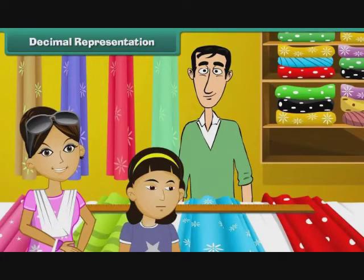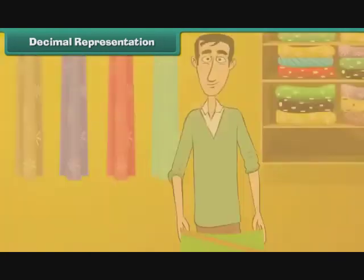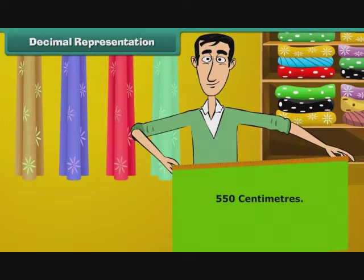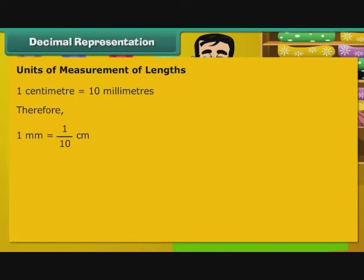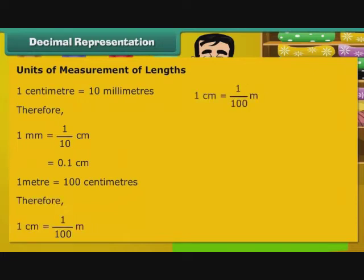Bela accompanies her mother to a saree shop. She asks the shopkeeper the actual length of a saree. The shopkeeper measures it as 550 cm. Bela wants to know if 550 cm can be expressed as metres. Let us understand the relationship between different measures of length. 1 cm is equal to 10 mm. Therefore, 1 mm is equal to 1 by 10 cm, that is 0.1 cm. 1 m is equal to 100 cm. Therefore, 1 cm is equal to 1 by 100 m, that is 0.01 m.